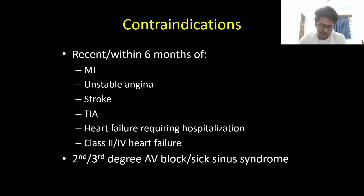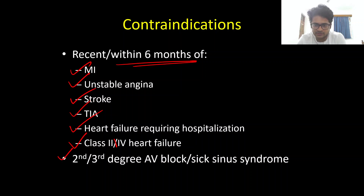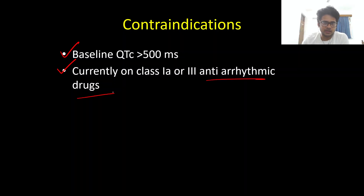Coming to the contraindications: any patient with a history within 6 months of myocardial infarction or unstable angina (acute coronary syndromes), prior stroke or TIA within 6 months, Class 3 or Class 4 heart failure, second-degree or third-degree AV block or sick sinus syndrome in patients not currently on a pacemaker, baseline QTc more than 500 milliseconds, and patients currently taking Class 1a or Class 3 antiarrhythmic drugs — these are all absolute contraindications to starting Fingolimod.